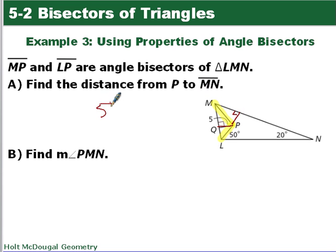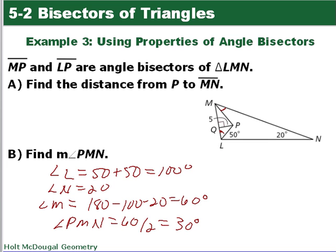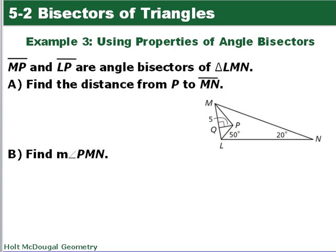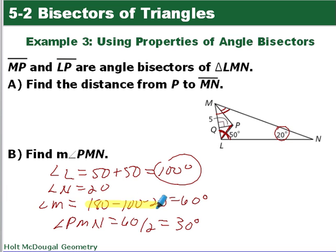Now we want to find angle PMN. We know this angle is 50 degrees; since this is an angle bisector, the whole angle is 100 degrees. We also know another angle is 20 degrees. By the triangle sum theorem, the angles add to 180, so 180 minus 120 gives us 60 degrees for the whole angle at M. Since this is an angle bisector, angle PMN is half of 60, which is 30 degrees.